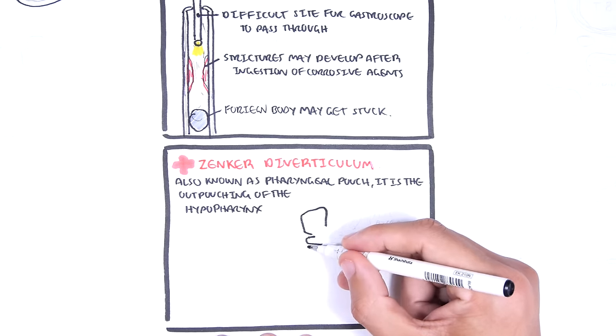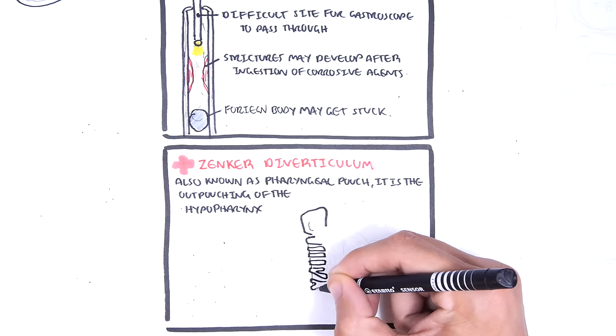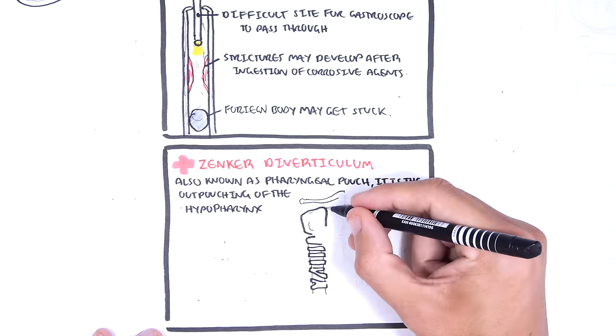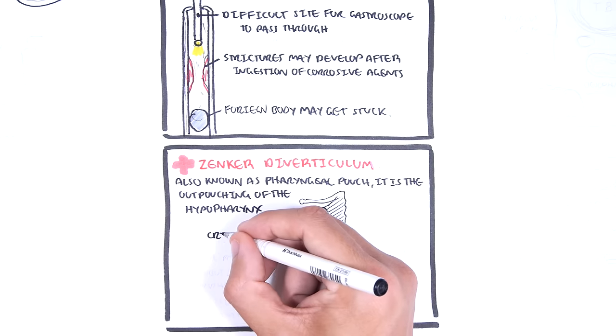Drawing it out, the larynx and trachea here on the left, you have the esophagus running behind it. There are important muscles, the cricopharyngeus and the inferior pharyngeal constrictor, which wrap around the esophagus.